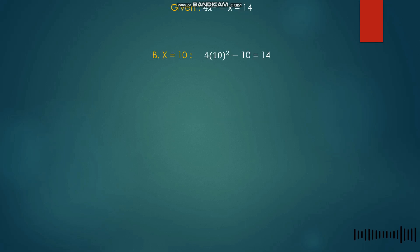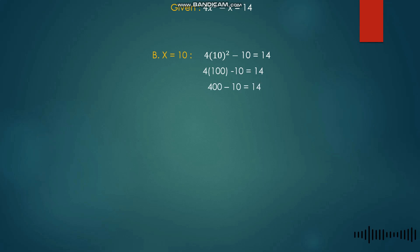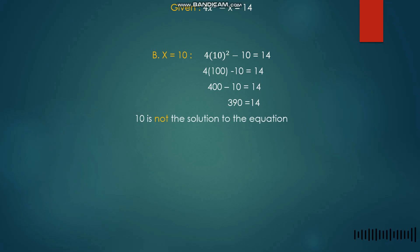Next we try Letter B where x = 10. Substituting, we get 4 times (10)² minus 10 = 14. Since 10² = 100, we have 4 times 100 minus 10 = 14, giving 400 − 10 = 390. Since 390 ≠ 14, Letter B is also not the correct answer.